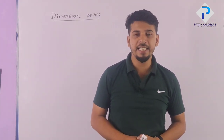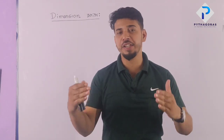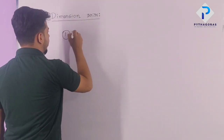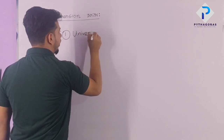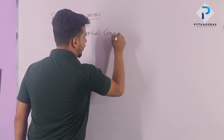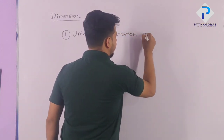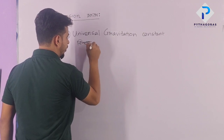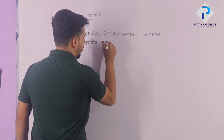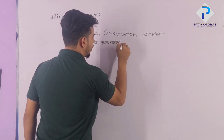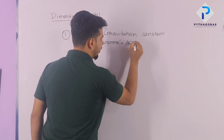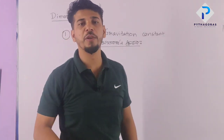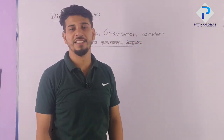So, I mentioned that constant — Universal Gravitational Constant. It's called Universal Gravitational Constant. What do you mean?